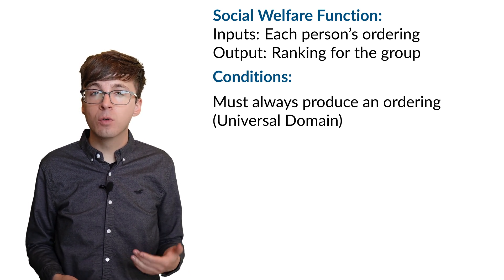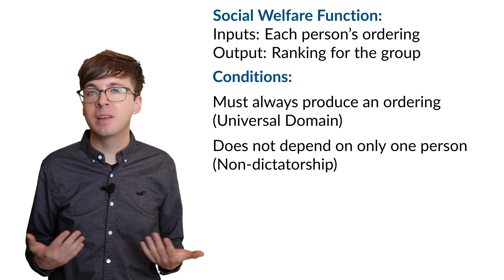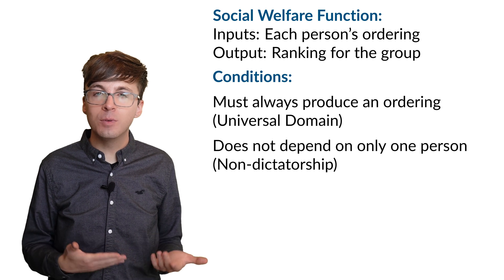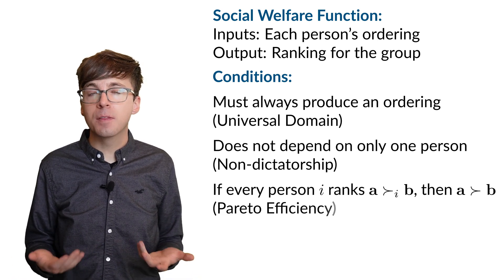The second requirement is our rule cannot be a dictatorship. No one person can determine the entire outcome. The third requirement is that if everyone unanimously prefers A to B, then A should beat B in the group's ordering.